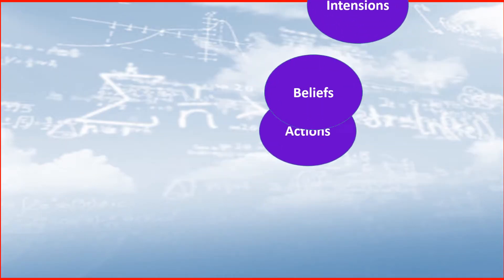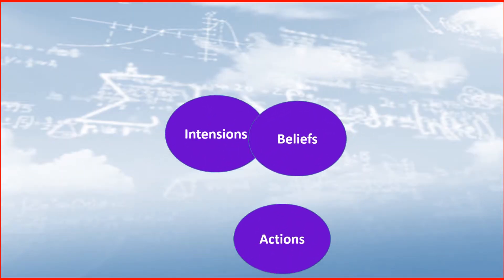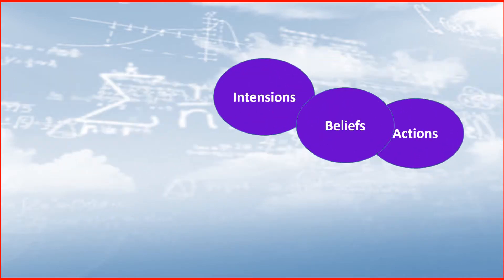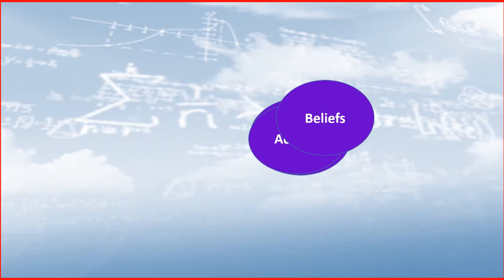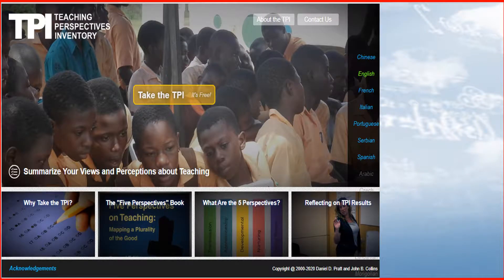To determine the interrelated set of beliefs and intentions that navigates and validates my action, I use a tool called the Teaching Perspective Inventory, hereafter referred to as TPI, developed by Dr. Pratt and Dr. Collins as a result of over two decades of research. The TPI identified my dominant or co-dominant perspectives, my recessive perspectives, and the backup perspectives I have.